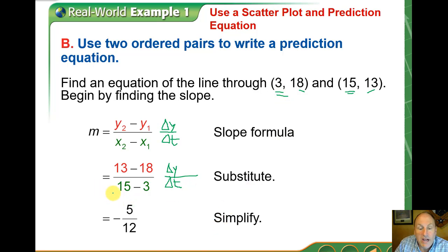So our slope, our rate of change, is negative 5% because that y was in percent per year. Negative 5% over 12 years.